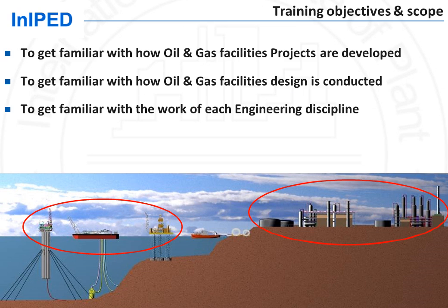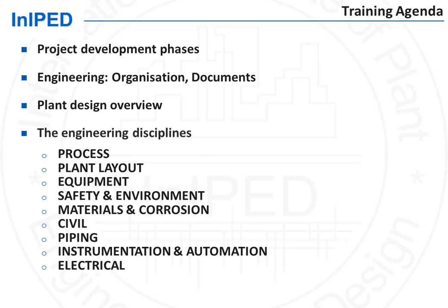This module will get you familiar with how oil and gas facilities projects are developed, with how oil and gas facilities design is conducted, and will get you familiar with the work of each engineering discipline. Our agenda is the following: this module 0 will cover the project development phases, the organization and documents issued by engineering, and an overview of the plant design process. The following modules will each cover the work of one engineering discipline.